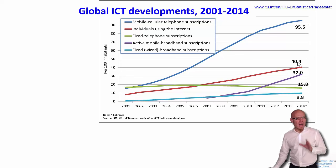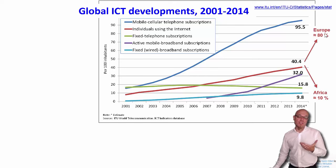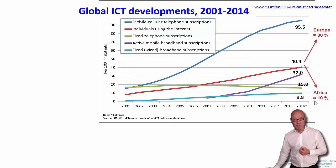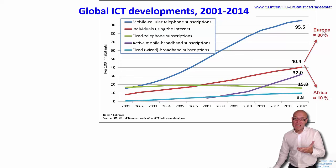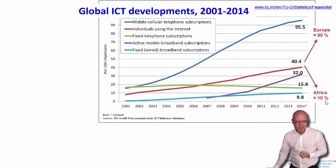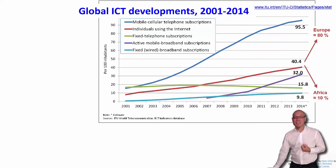These are global averages that hide many details. For example, that 40% internet penetration is an average between Europe, where 80% of the population uses the internet, and Africa, where only a little more than 10% does. So this 40% is a very coarse-grained average. In the developed world most people use the internet, while in the developing world only about 10 out of 100 people do — basically the super rich in those countries.